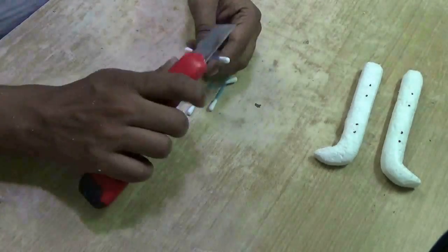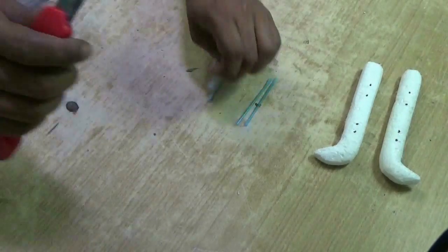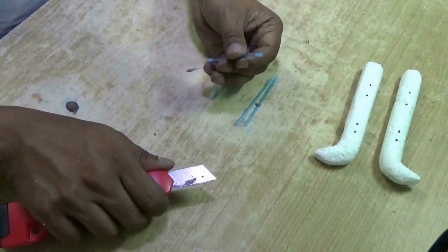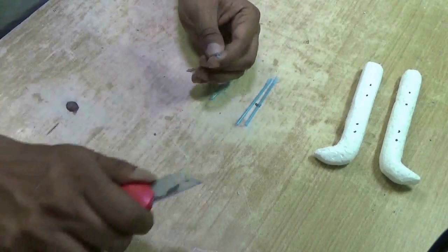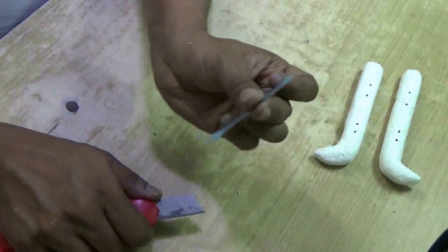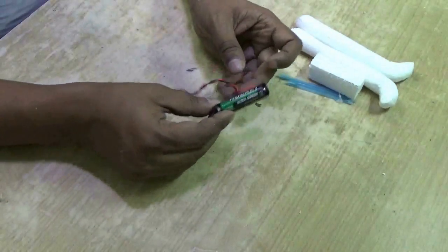Now collect four buds, remove the cotton, and shave the front edge like this.